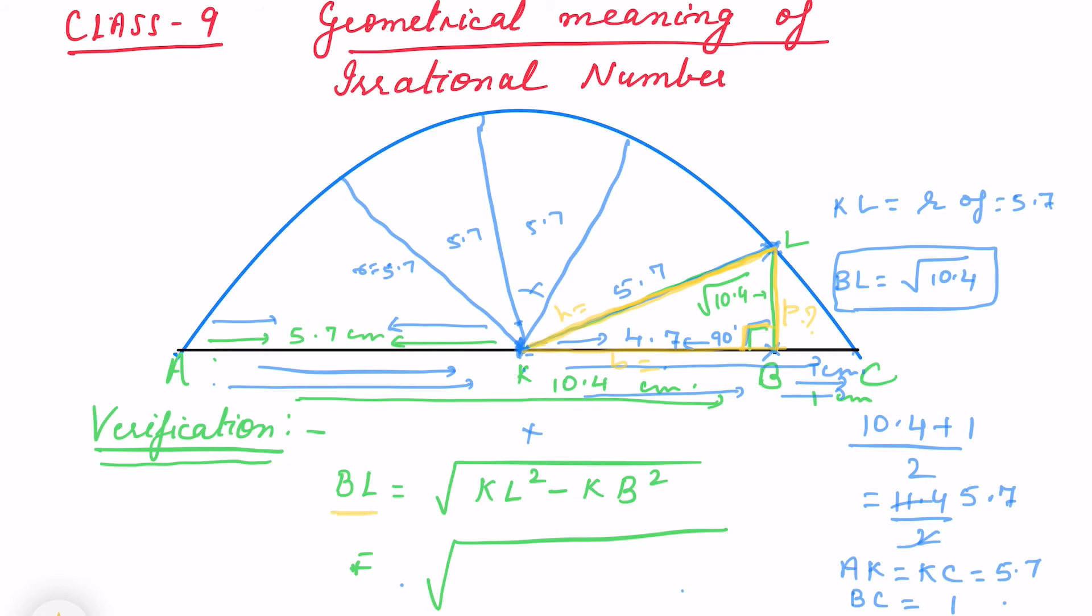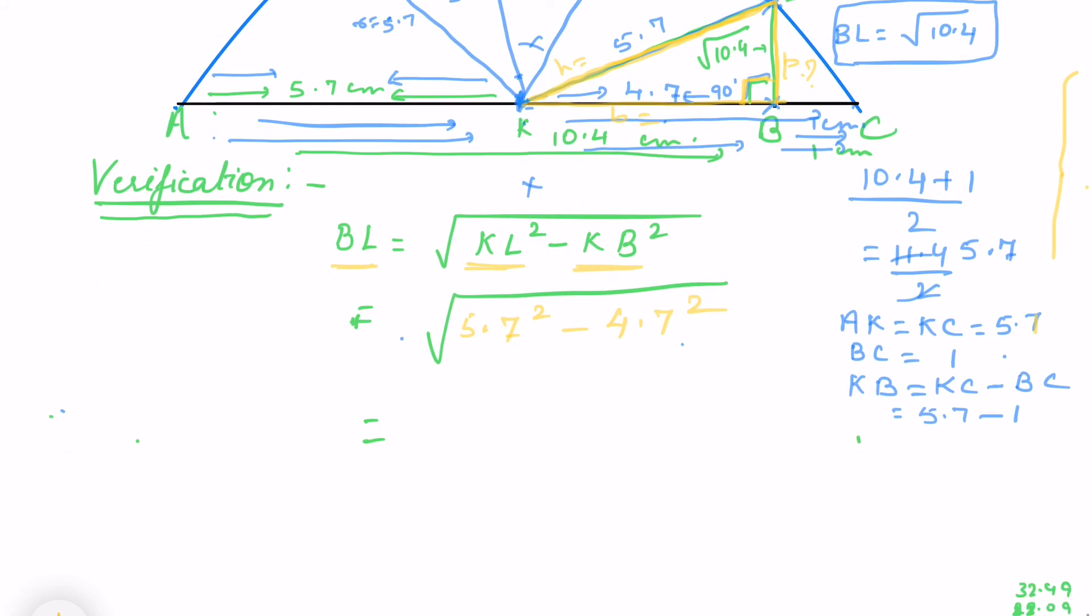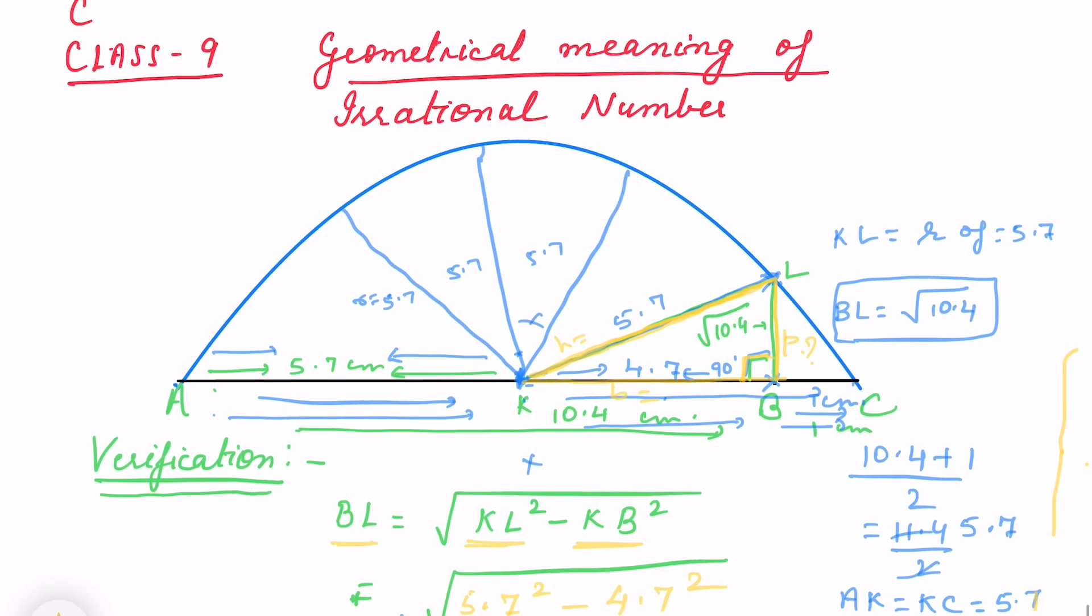So perpendicular, that is BL, equals √(KL² - KB²). It is √(5.7² - 4.7²). 5.7 squared is 32.49 and 4.7 squared is 22.09. That will be √10.4, and that we are representing this irrational number on number line, √10.4. So BL is √10.4.